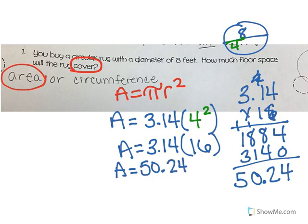50.24 what? I'm talking about feet. And remember, it's covering it, so that means it's square units. Since our unit is feet, we're going to say square feet. So my area is 50.24 square feet.